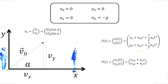Wohingegen in y-Richtung die Gravitationskraft wirkt, das heißt, auf den Ball wirkt in y-Richtung eine negative Beschleunigung. Deswegen ist ay gleich minus g. Als nächstes können wir diese Randbedingungen in unsere Bewegungsgleichungen einsetzen. Wer will, kann jetzt auf Pause drücken und dies selber probieren. So sehen die Gleichungen aus, wenn wir unsere Werte aus den Randbedingungen in unsere Bewegungsgleichungen eingesetzt haben.